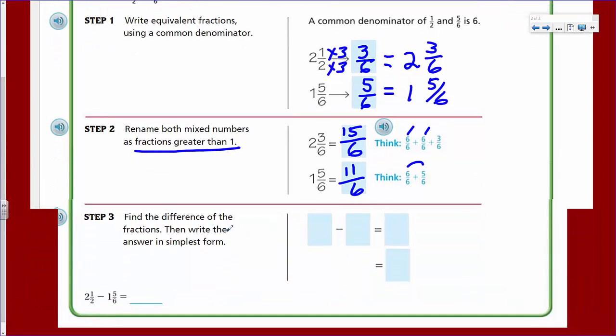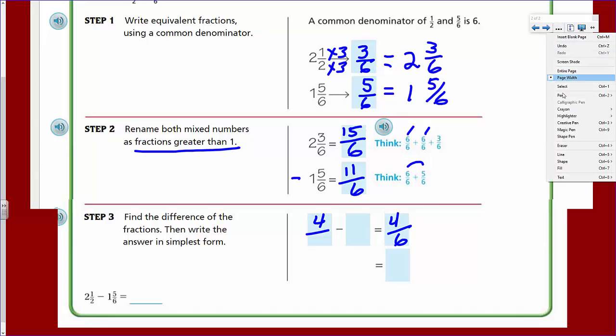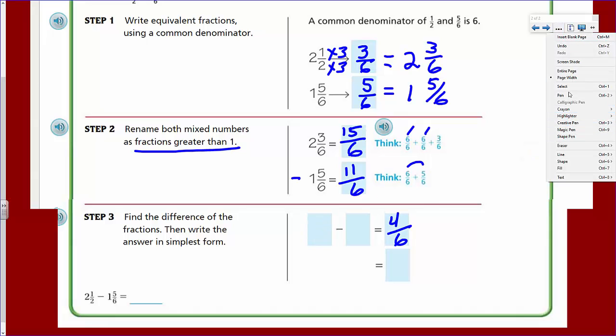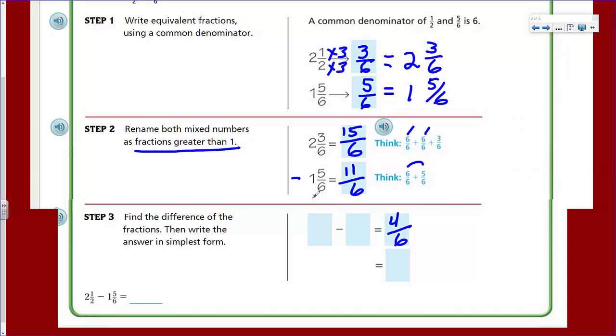So this is the other way. Now let's just find the difference of the fractions, then write the answer in simplest form. Well, 15, we're subtracting here. So 15 minus 11 is going to equal 4. So here, basically, we have the 15/6, and then we have the 11/6. What do you know? 4/6. And in simplest form, that would be 2/3. Because here we could divide out a 2 from the numerator. We could divide out a 2 from the denominator, therefore giving us a new fraction of 2/3.